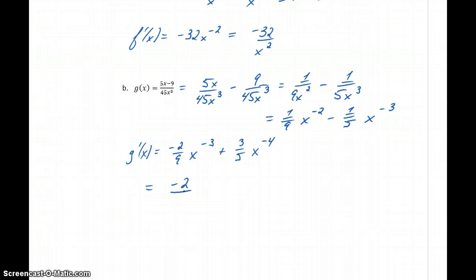Or again, we could rewrite this as negative 2 over 9x cubed plus 3 over 5x to the fourth. So when we start off with a function that looks a little more complex, we want to think about how we can rewrite that to break it down to match some of the simple properties we've established so far.